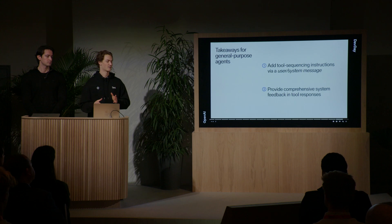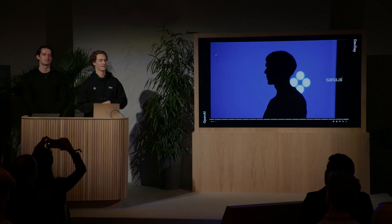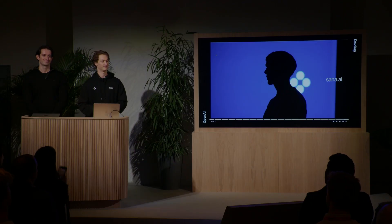The two big actionable takeaways: first, add tool sequencing instructions via a user or system message — this enables more complex workflows. Second, provide comprehensive system and user feedback in tool responses so the agent understands what's going on and can collaborate well. These are just a few of our learnings at SANA. We're excited to continue building general agents, and we think combining that with all of your company's knowledge will unlock huge amounts of productivity and help people solve bigger problems. Thank you.